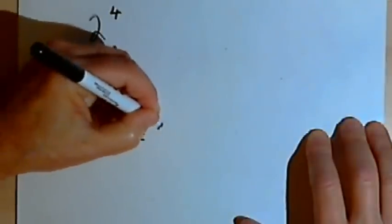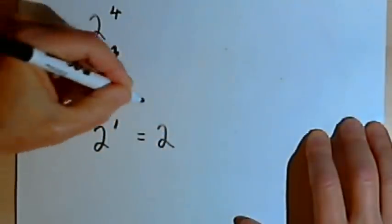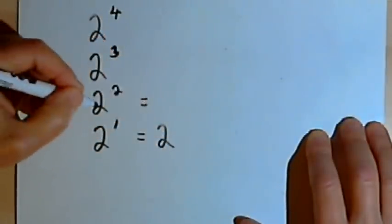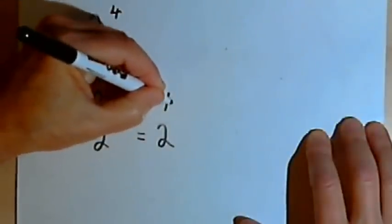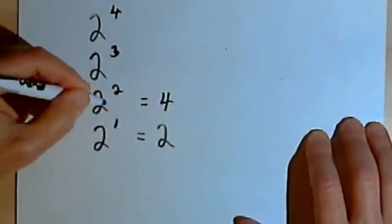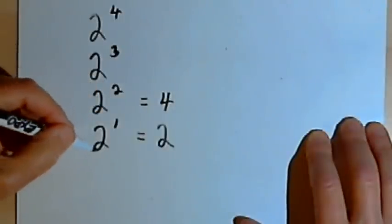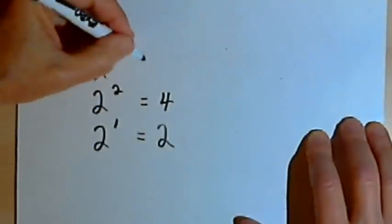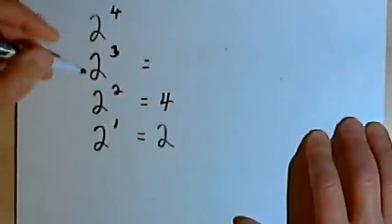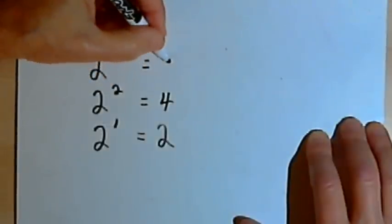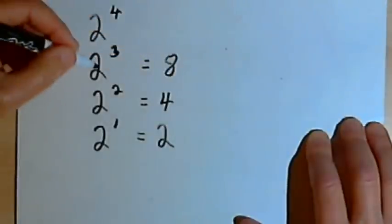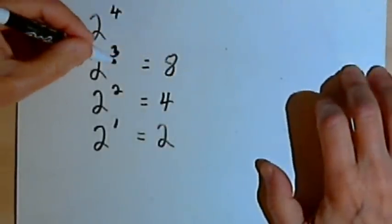Well, 2 to the first power is just 2, and 2 squared is twice as much. It equals 4, because we're multiplying by another 2. We have 2, and then we have 2 times 2. When we get to 2 to the third, it's going to be twice as much again. It's going to be 8, because now we're multiplying 2 times 2 times 2.